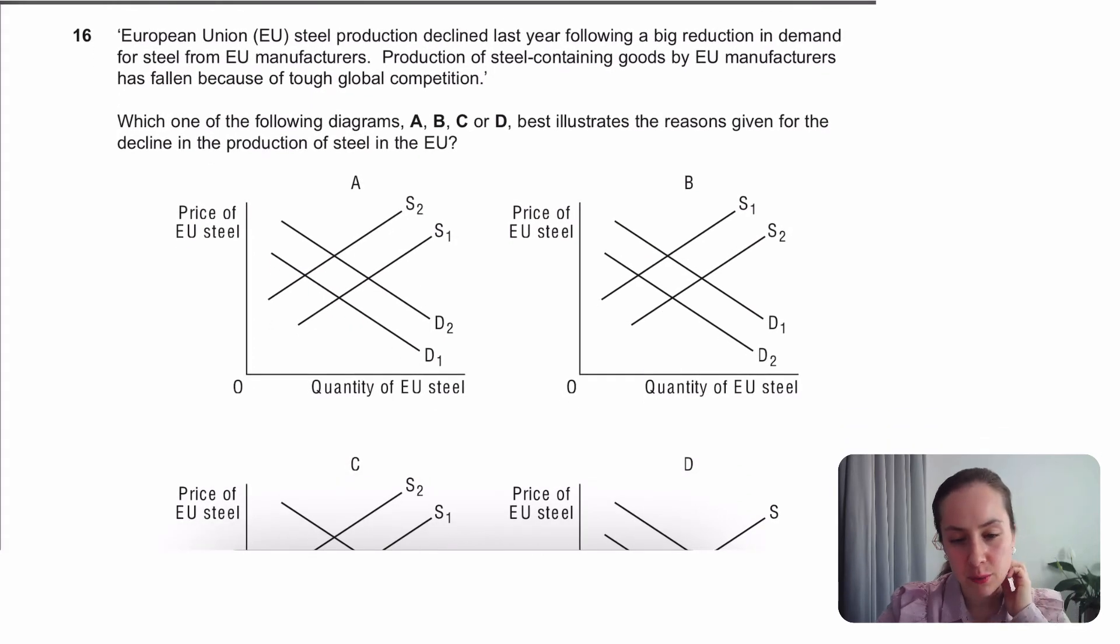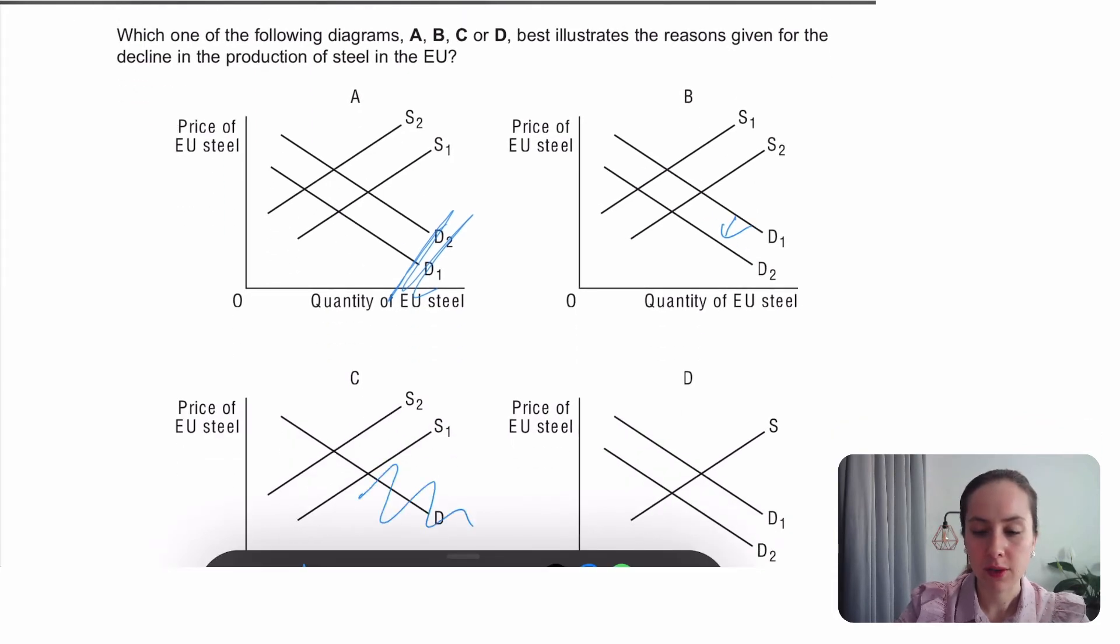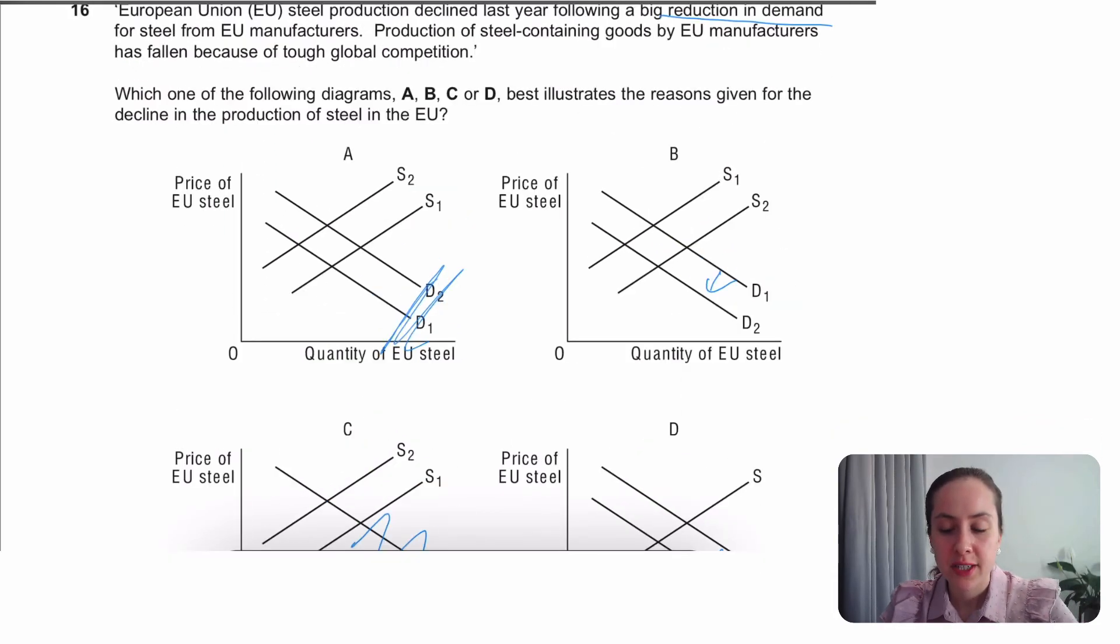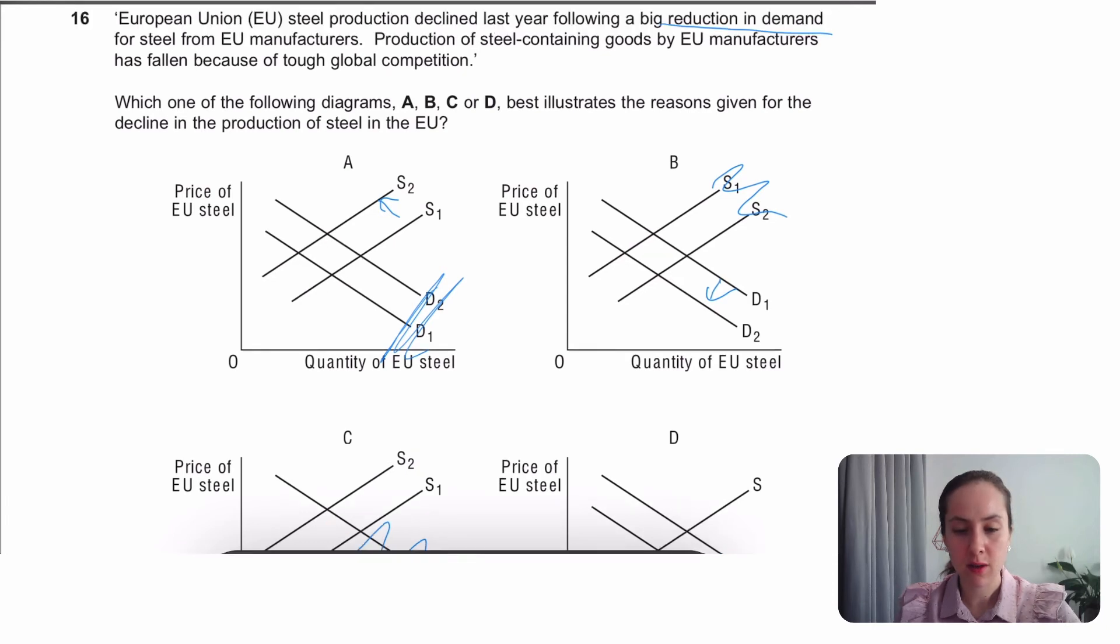The European Union steel production declined last year. There was a big reduction in demand. So I reckon we need a reduction in demand. Not that one. We need a reduction in demand. Not that one. Production of steel containing goods by EU manufacturers has fallen because of global competition. Production has fallen. I'm looking for a shift of supply to the left. That one looks good. This one's the wrong way around. Although nothing lines up. So I reckon I made a mistake somewhere.